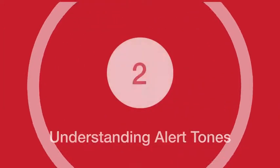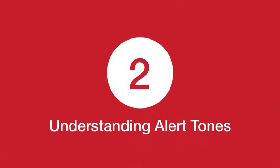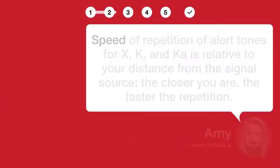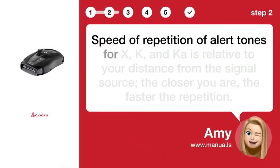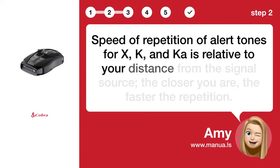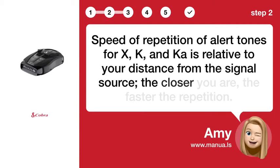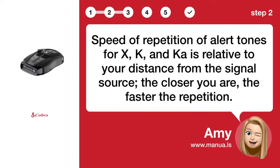Step 2: Understanding alert tones. The speed of repetition of alert tones for X, K, and Ka is relative to your distance from the signal source. The closer you are, the faster the repetition.